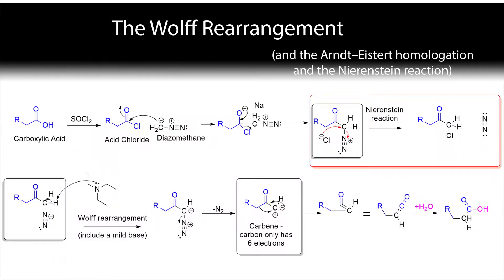We're going to do three reactions in one here because they all stem from the same reaction. The Wolff rearrangement is the main reaction that I want to discuss, but it's used in the Arndt-Eistert homologation, which lets you take a carboxylic acid and extend the chain length by one, making a homologue.